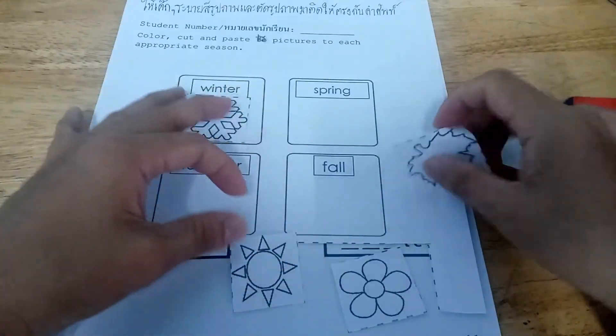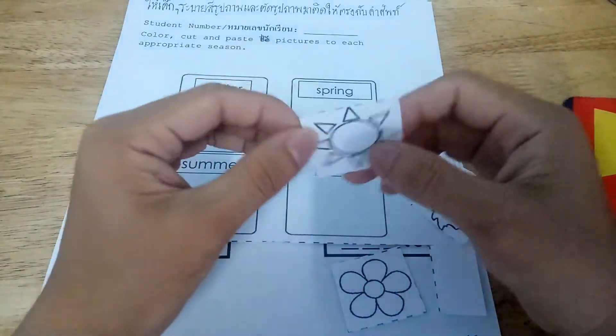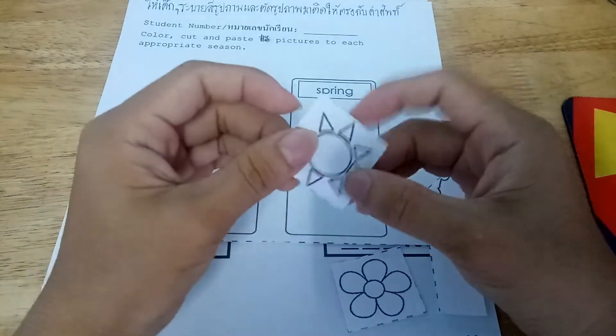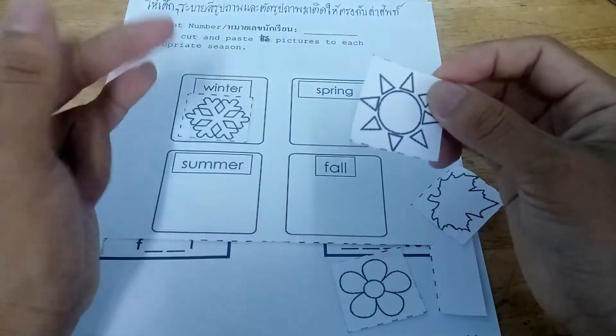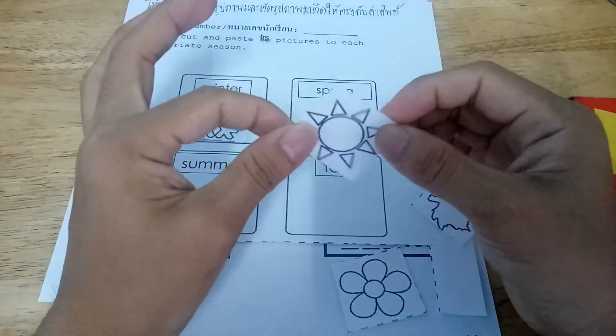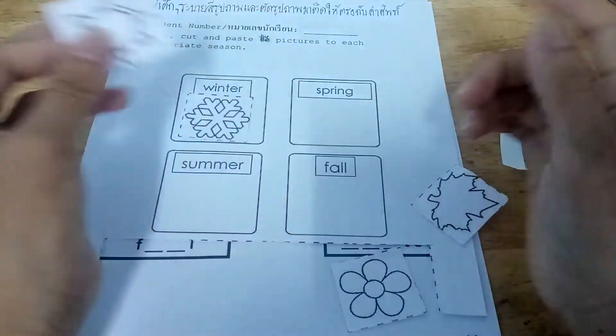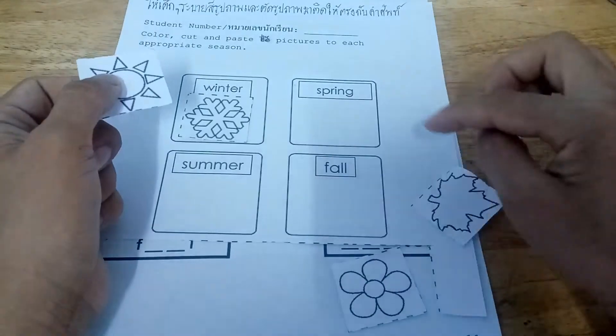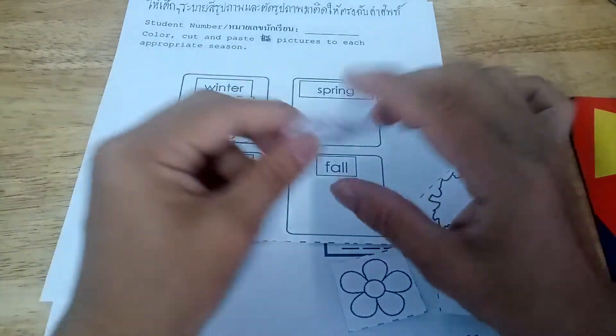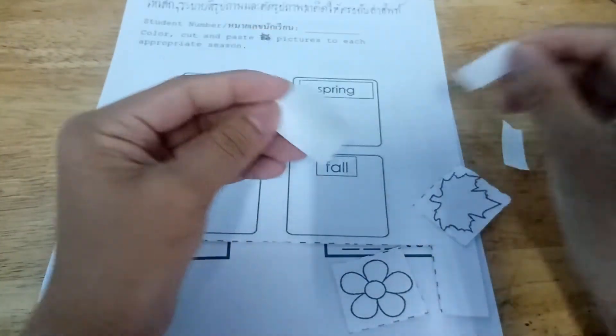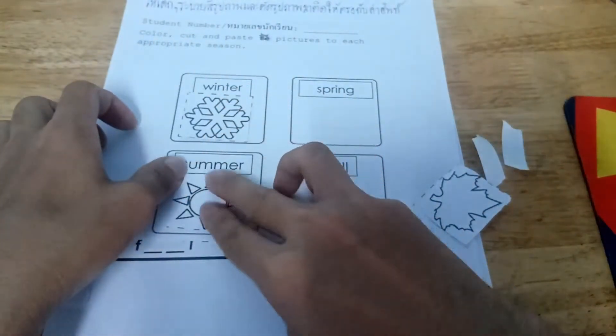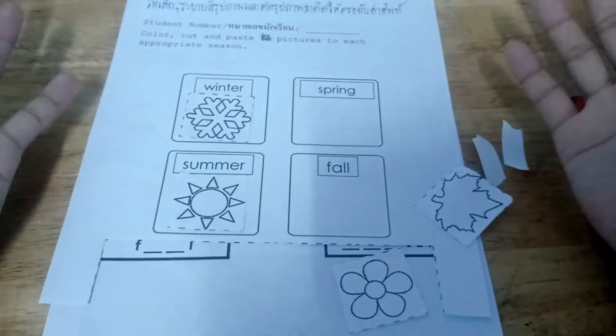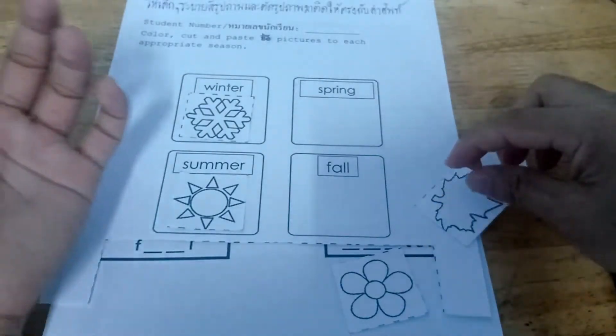Okay, next is this one. This is a sun. It represents for? Okay, what season? Is it spring, summer, or fall? Okay, this represents for? Summer. Okay, again, let's say summer. Very good.